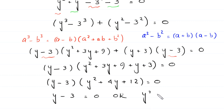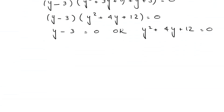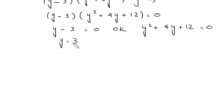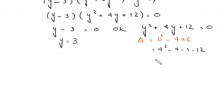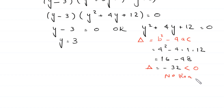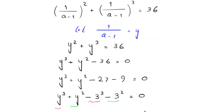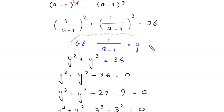From this factored form, either y minus 3 equals zero, giving y equals 3, or y squared plus 4y plus 12 equals zero. The discriminant of the quadratic is b squared minus 4ac equals 4 squared minus 4 times 1 times 12 equals 16 minus 48 equals negative 32. Since the discriminant is less than zero, there are no real solutions from this equation, so y equals 3 is the only real value.